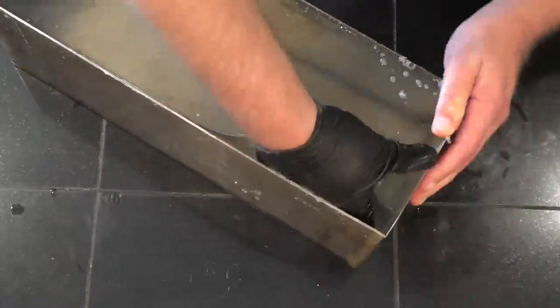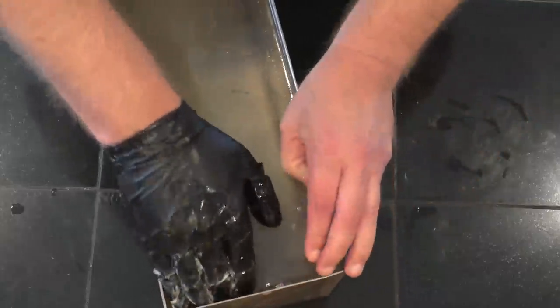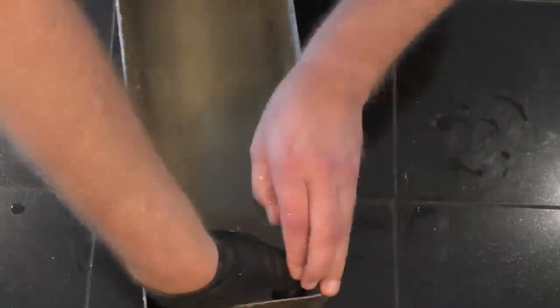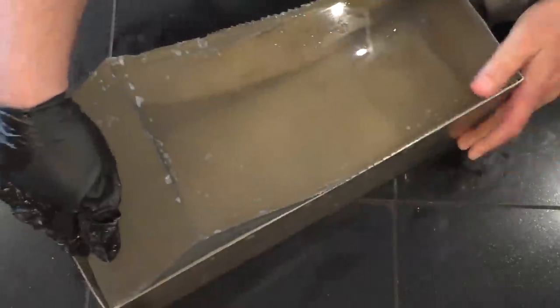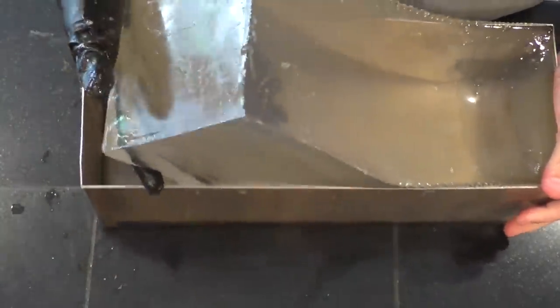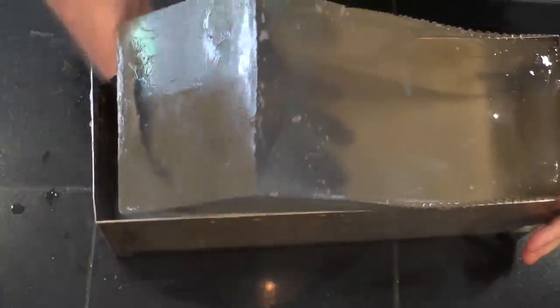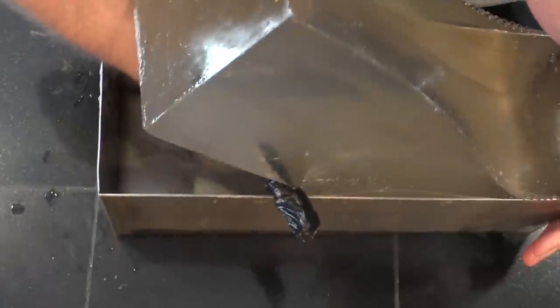Now back to our operation here. I'm getting the block lubricated all the way down to the bottom. And finally, once I get it all lubed up, you can reach down there, grab the bottom, and it just slides out that easy. Now I've watched a lot of other videos of how to remove gel. I've never seen anyone use something as simple as soap. This is the way to do it, folks.